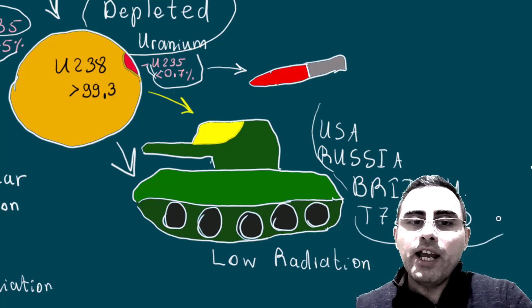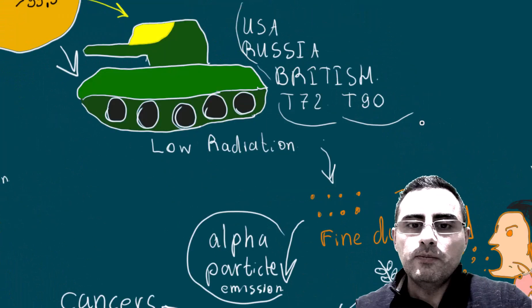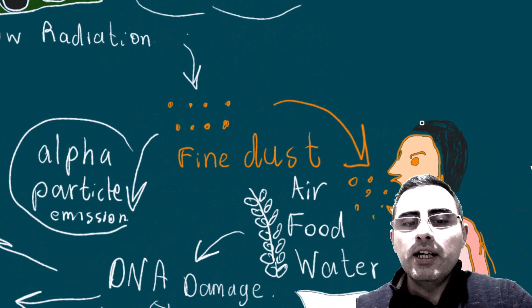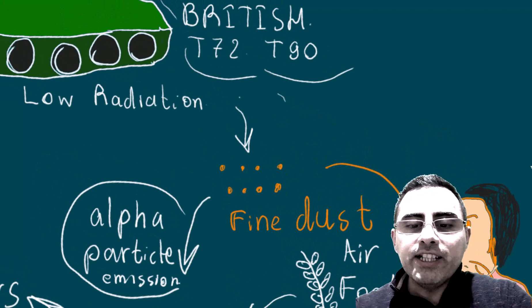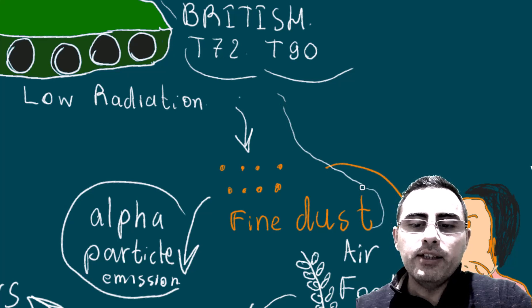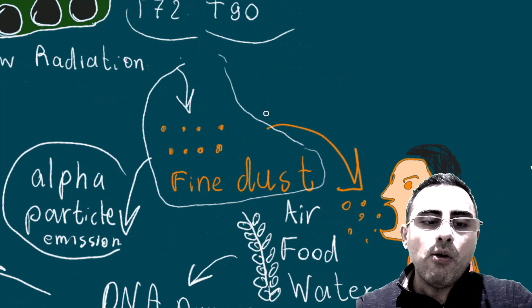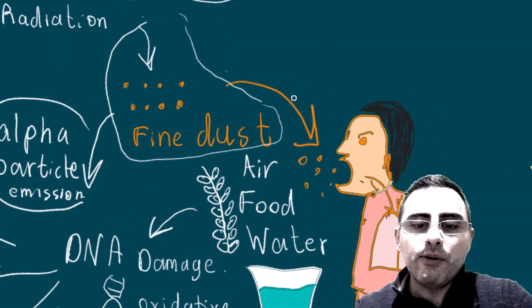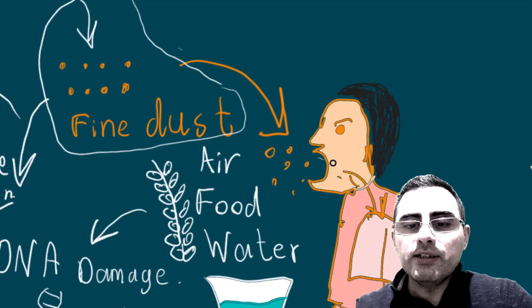It is widely used by USA military, Russian military, British military. For example, tanks T-72 and T-90 contain parts of depleted uranium. Now let's explain how it affects our health. Depleted uranium during military actions: fine dusts and fine particles are produced and created of depleted uranium, and we inhale it or we get it from air, from food, or from water.